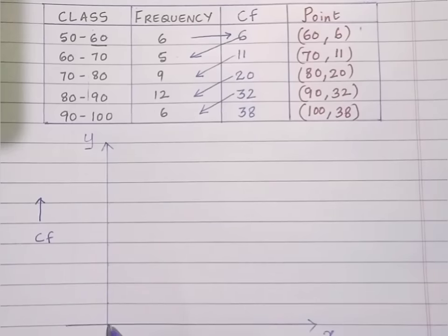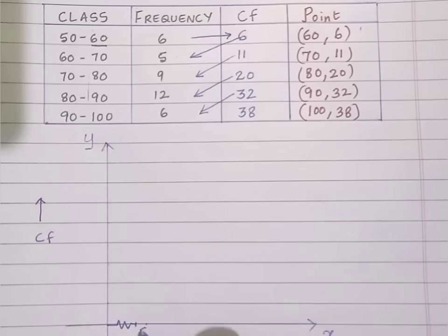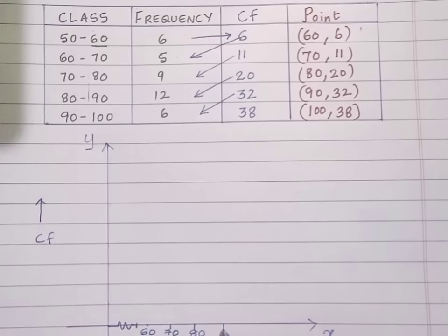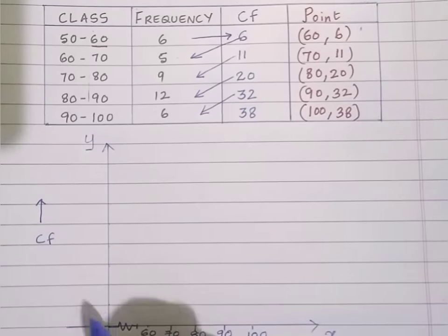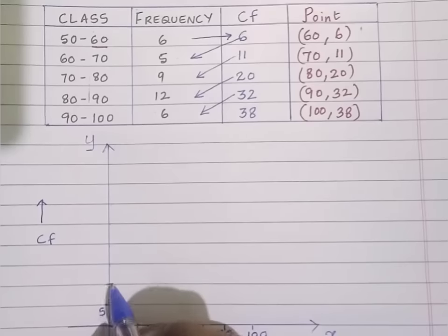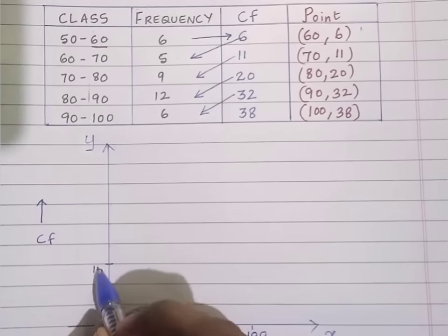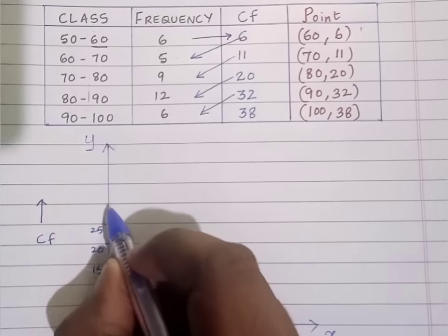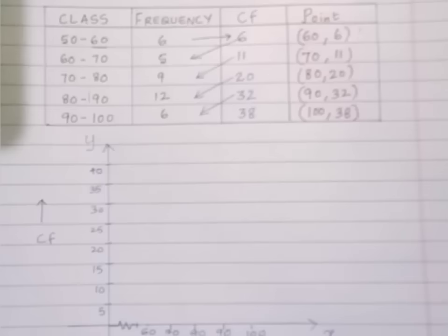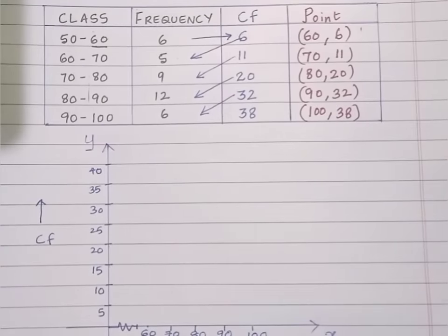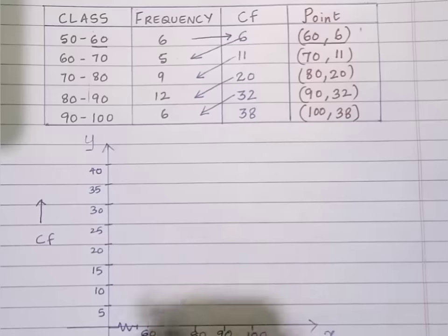The numbers start from 60, so I will start from 60, then 70, 80, 90, 100 with class size 10. For the Y-axis (cumulative frequency), the class size is not the same. I will take the lowest point as 5, then take class size 10: 15, 20, 25, 30, 35, 40. The least number in cumulative frequency is 6 and the highest is 38, so I will plot from 5 to 40.